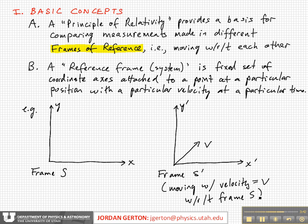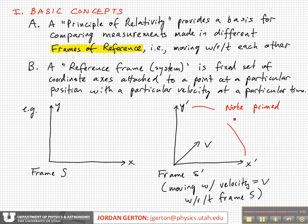That's basically just a general definition of a reference frame. The velocity V can be anything. I want to point out specifically that we have these primes on these coordinate axes. It doesn't really matter which set of axes you put the primes on. What matters is that one of them has a prime. They're moving with respect to each other in general, and one of them has a prime and one of them doesn't.